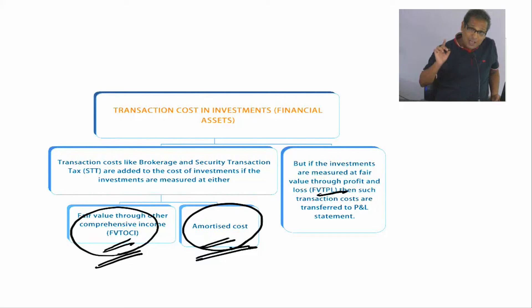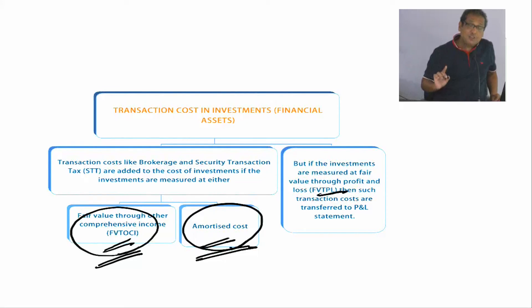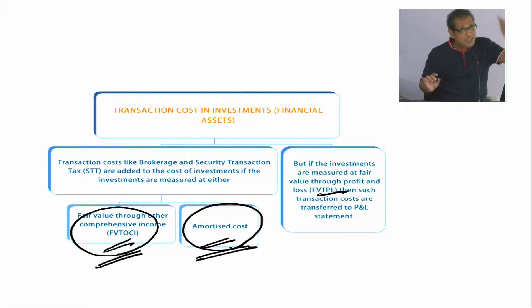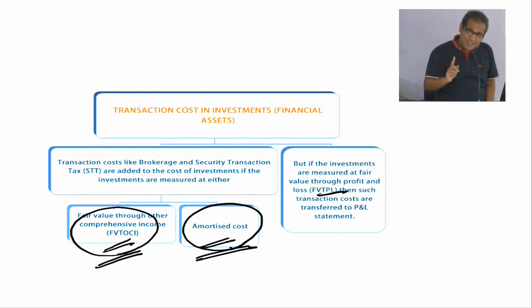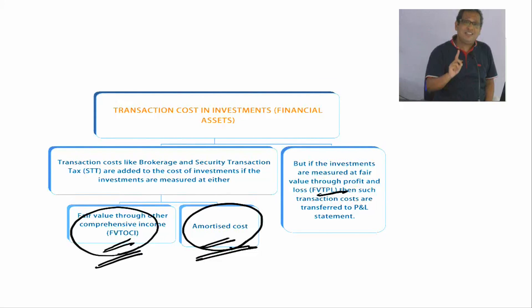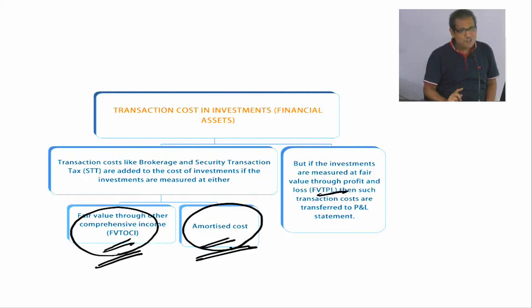For FVTPL assets, the transaction cost for acquiring the financial asset goes to the P&L account. It does not form part of the cost of the asset.